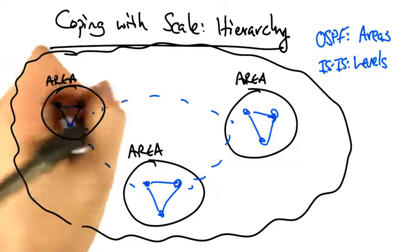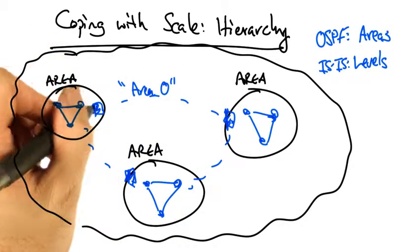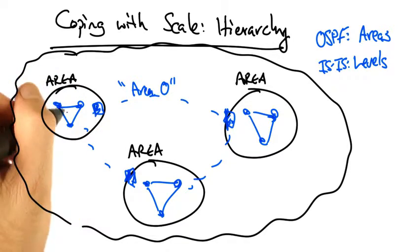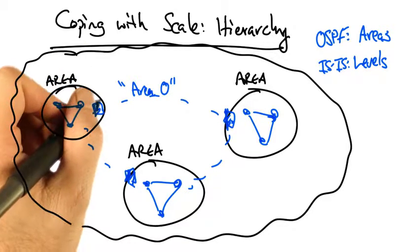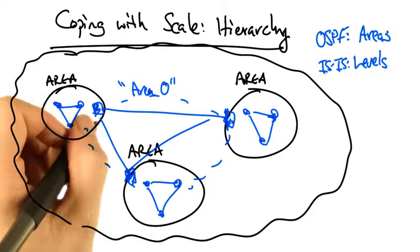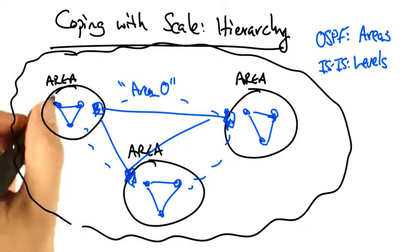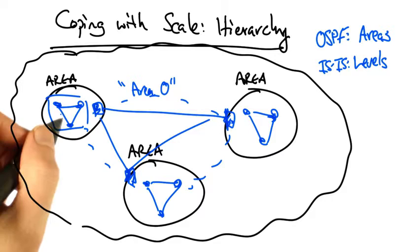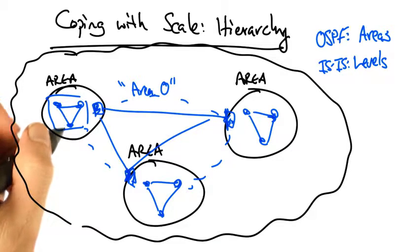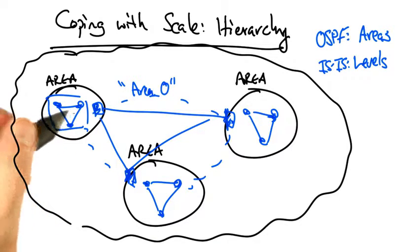In OSPF, the backbone area is called area 0, and each area not in area 0 has an area 0 router. The area 0 routers perform shortest path computation, and routers in other areas independently perform shortest path computation.